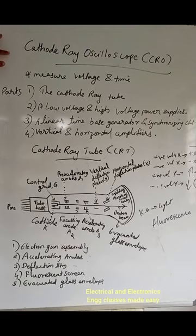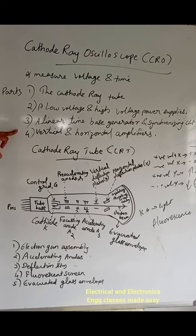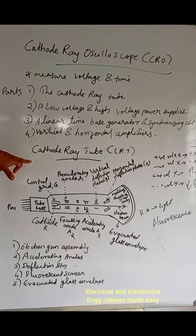A cathode ray oscilloscope, or CRO, is used to measure voltage and time, and it provides a visual representation of the waveform. These are the parts of the CRO. The main part — the heart of the CRO — is the cathode ray tube, that is, the CRT.